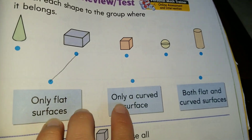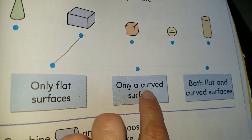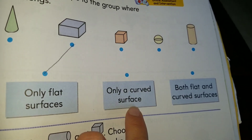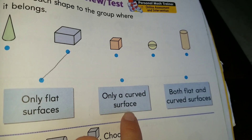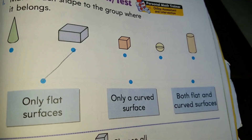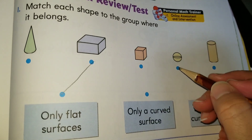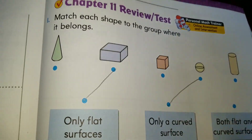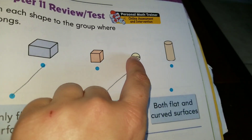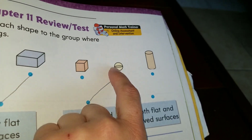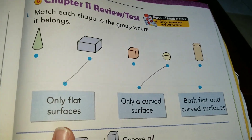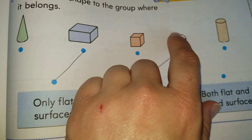Let's move on to the one in the middle: 'only a curved surface.' Which one is the only shape that has only curved surfaces? And if you said the sphere, you are very right. It is the sphere. The sphere is completely round, so it only has a curved surface.